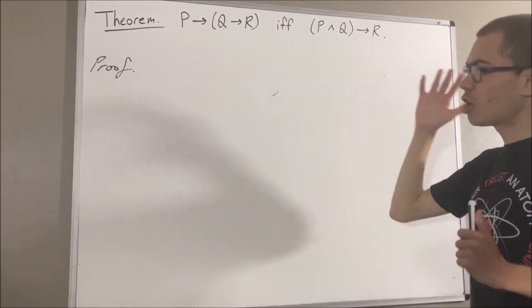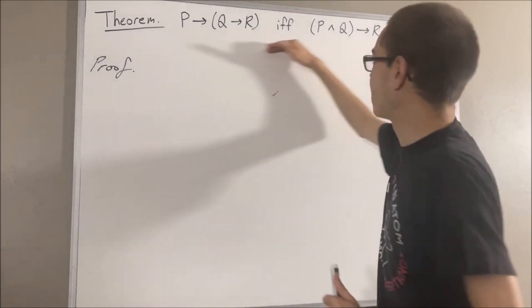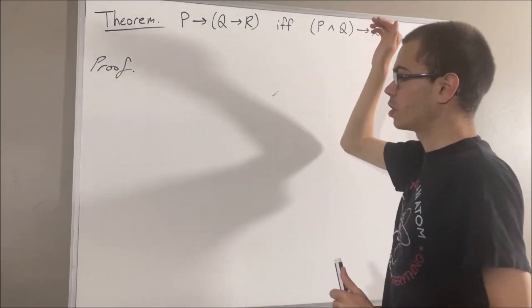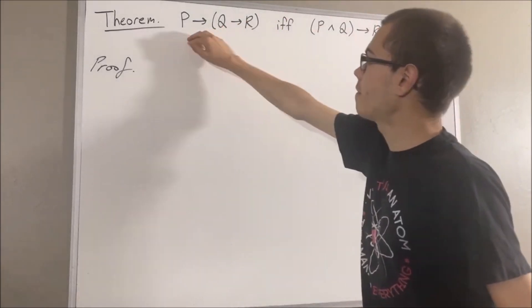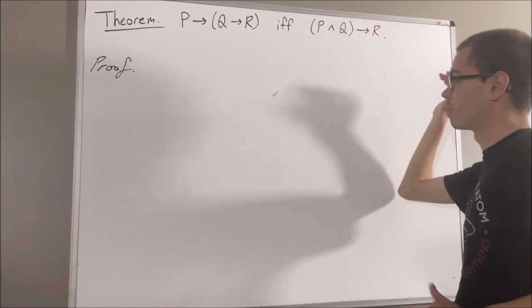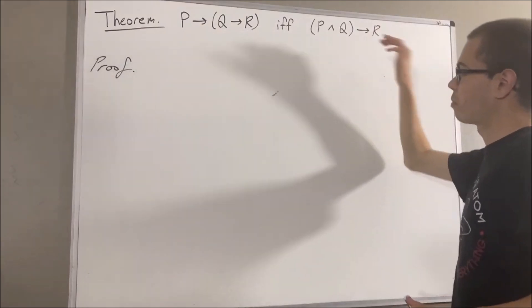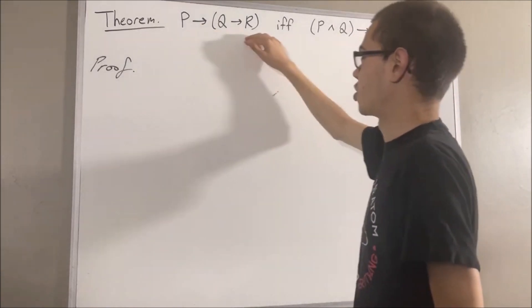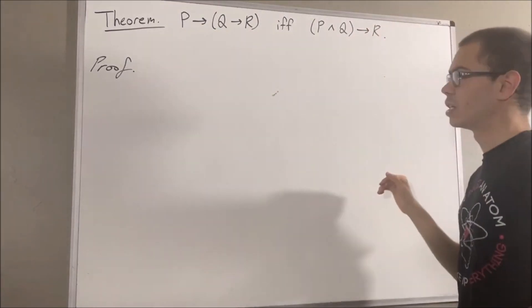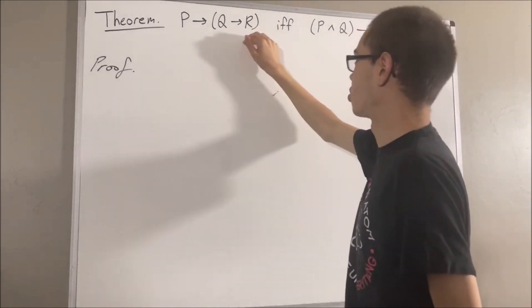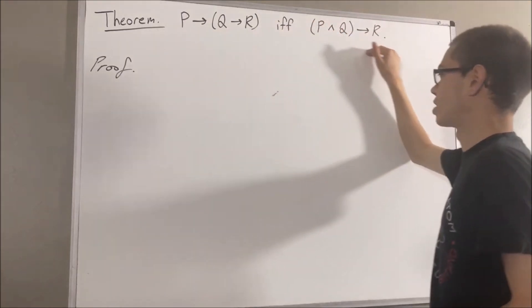Now, we're trying to prove a statement containing if and only if. So what we're going to do is we're going to prove if the first statement is true, then the second is true, and then we're going to prove if the second is true, then the first is true. Let's start by proving the forward direction.